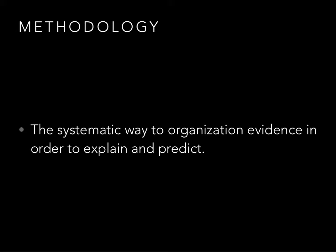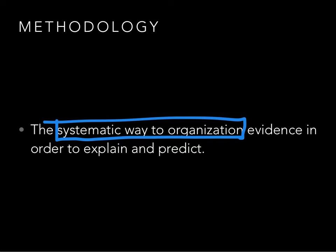A methodology will therefore be the systematic way to organize that evidence in order to explain and predict. What makes it scientific is this systematic organizational process. I don't just look at the world and say, 'I see lots of women, therefore everyone's a woman.' Instead, we'd use a sampling method and find that, say, 62% of the people on campus are women — and that's why I was seeing more women than men. That's the systematic organization, the way we use evidence to explain and predict.